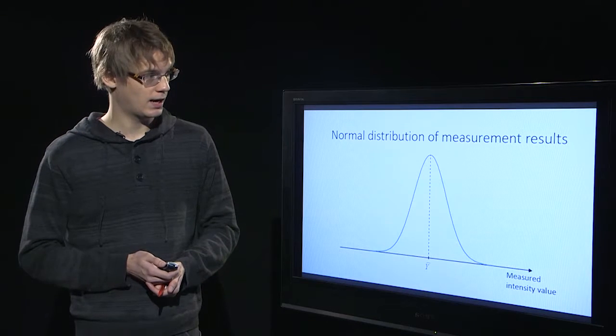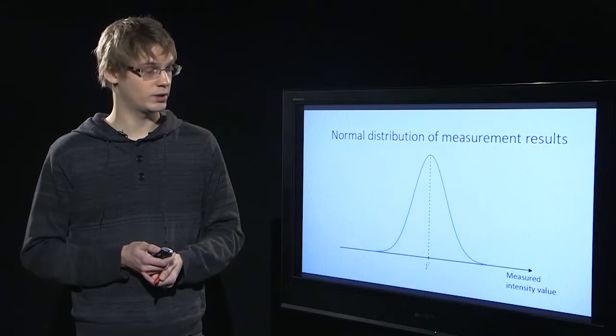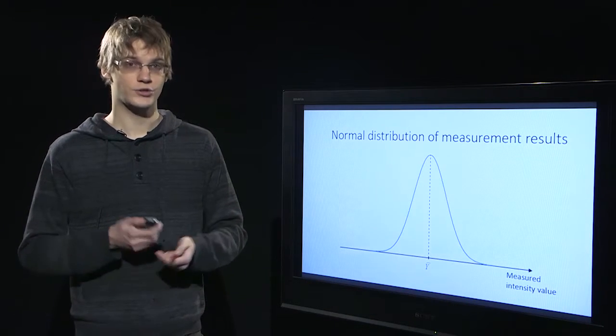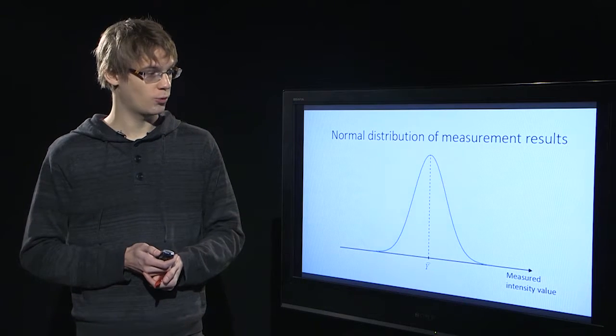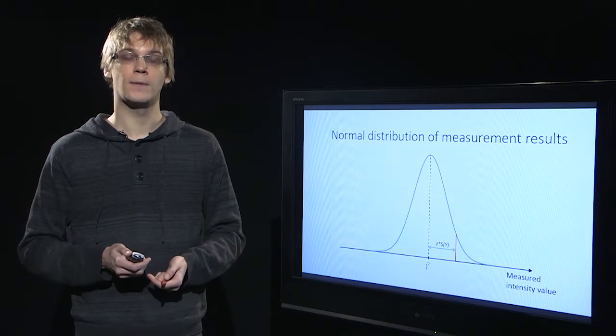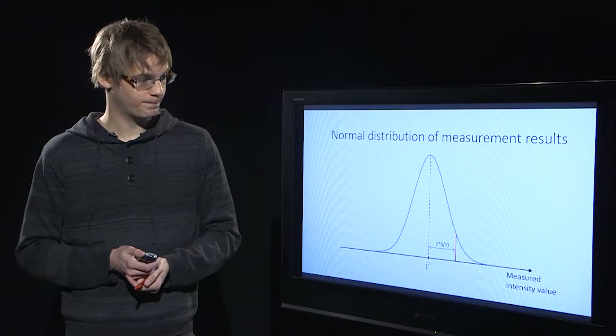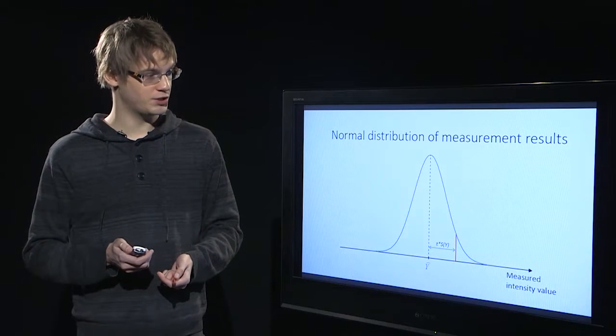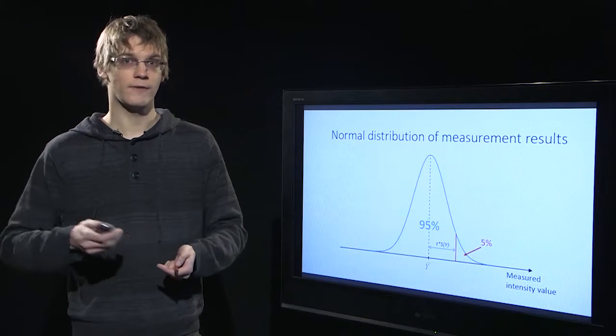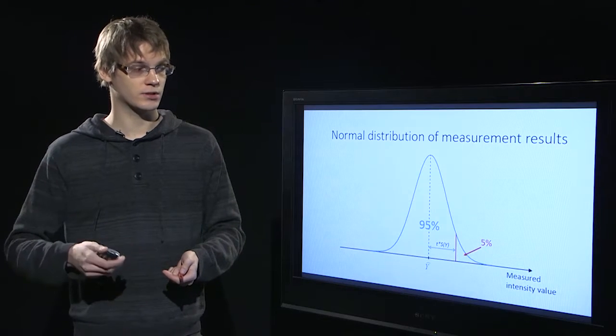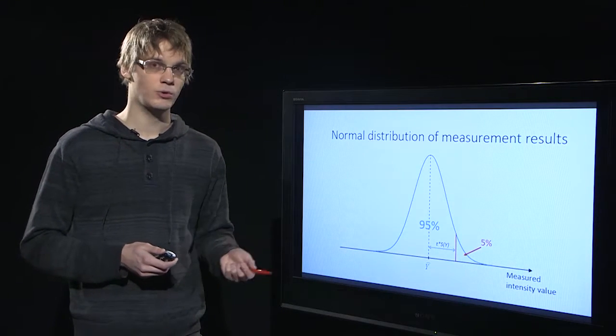From here, because we assume that we know the shape of the distribution, we can calculate this kind of a critical limit above which we know that 5% of the analysis results will fall above this and below it will be 95% of the analysis results.